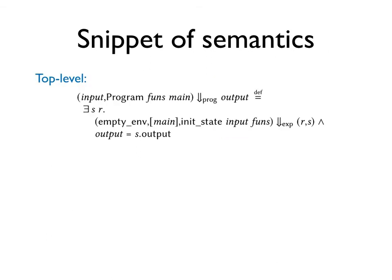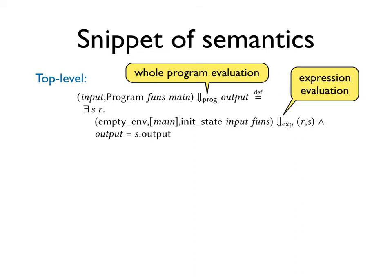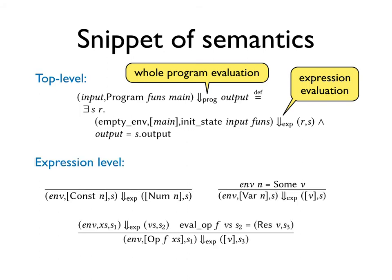The semantics of evaluating a whole program is defined in terms of expression evaluation. Expression evaluation is defined as a standard big step semantics. The const expression produces a natural number. The var expression fetches a value from the environment. Primitive operations are described by the final rule on the slide.